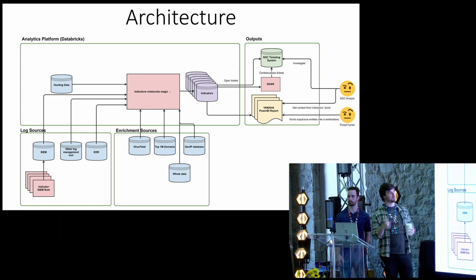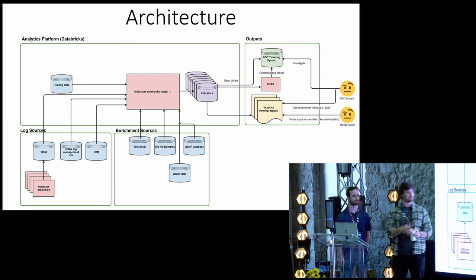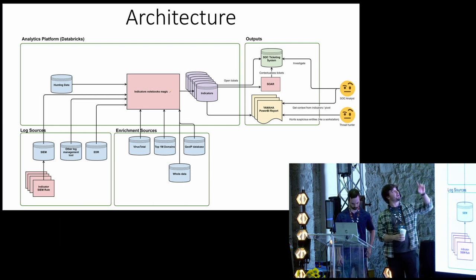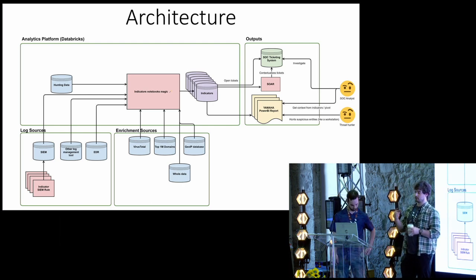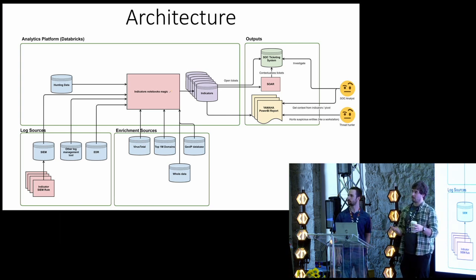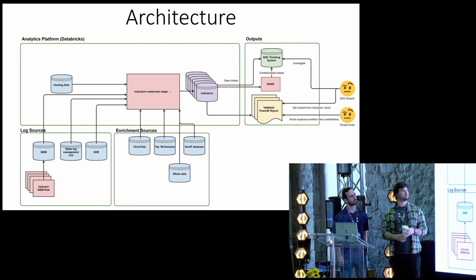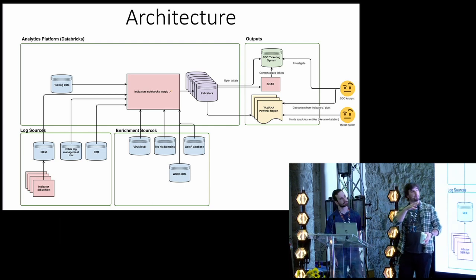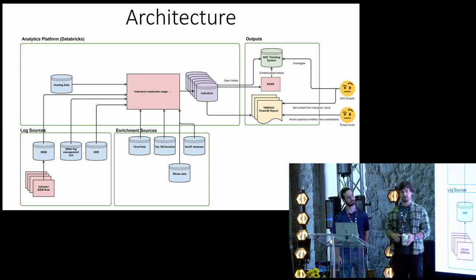There's also the enrichment sources, like VirusTotal for domains, binaries, just to get context for something known. Top 1 million domains, your IPs, et cetera. And then there's the, in the analytic platform, there's the hunting data, which is like, what are the binaries we have seen? When were they first seen? How many hosts? Same for users, binary domains, et cetera.